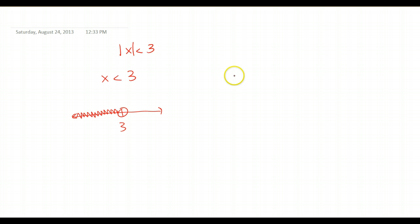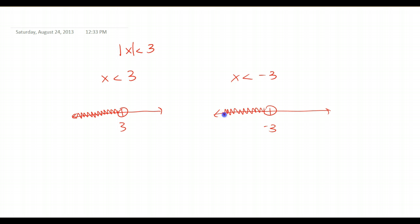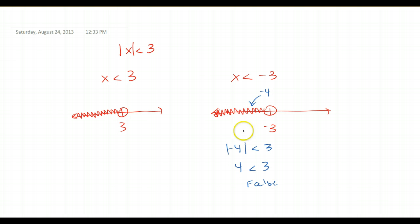Now for the other case: x is less than negative 3. If I graph this, I have an open circle shaded to the left. Let's test a point — say negative 4. The absolute value of negative 4 is not less than 3, so that's a false statement. Any number in that range still gives a false statement. So what we actually need to do is flip our inequality and say x is greater than negative 3.